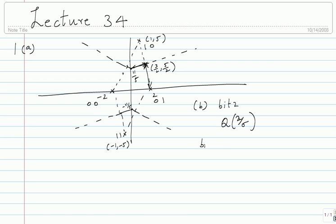For bit 1, once again fix minus 2. For bit 1 to be in error, you should go to either 1 + 5j or minus 1 minus 5j. The distance is root 34, and there are two possibilities, so you get 2 times Q(root 34 / 2 sigma). This is what I expected for part B. Several people have not written this — it's the simplest pairwise computation, a straightforward approximation. It should take only 10 seconds to write.